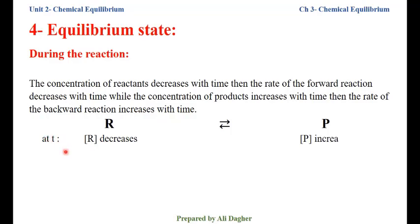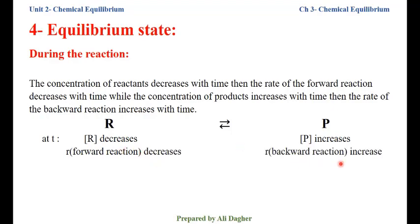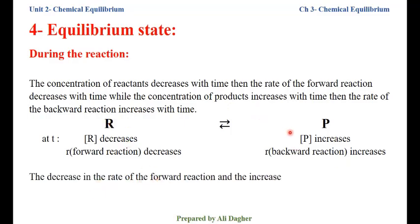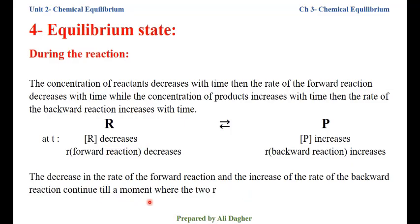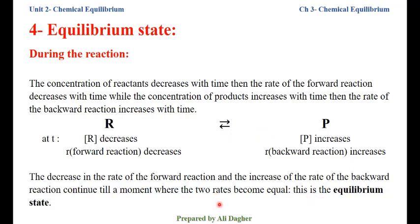At any instant T compared with T equals 0, the concentration of reactants has decreased while the concentration of products has increased due to formation of products in the forward reaction. The rate of the forward reaction decreases and the rate of the backward reaction increases. This continues until a moment where the two rates become equal — that means the rate of the forward reaction equals the rate of the backward reaction.